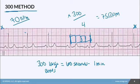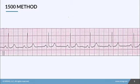The 300 method is a step above counting the QRS in reliability. Now the third and final method is called the 1500 method, or the 1500 rule. Keep it simple — I promise it's not that bad.